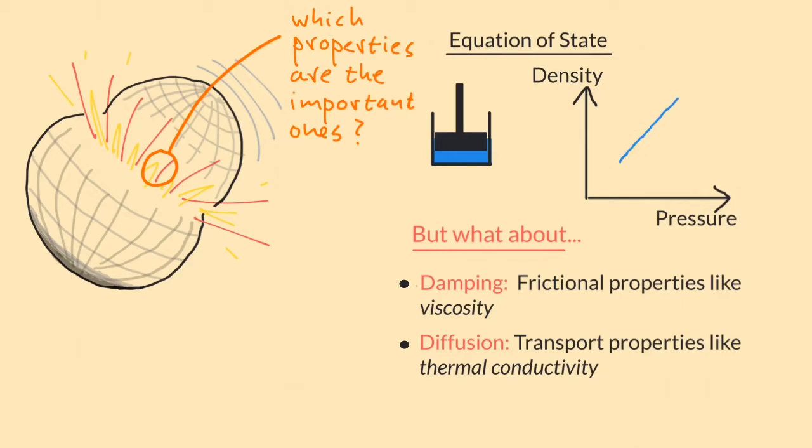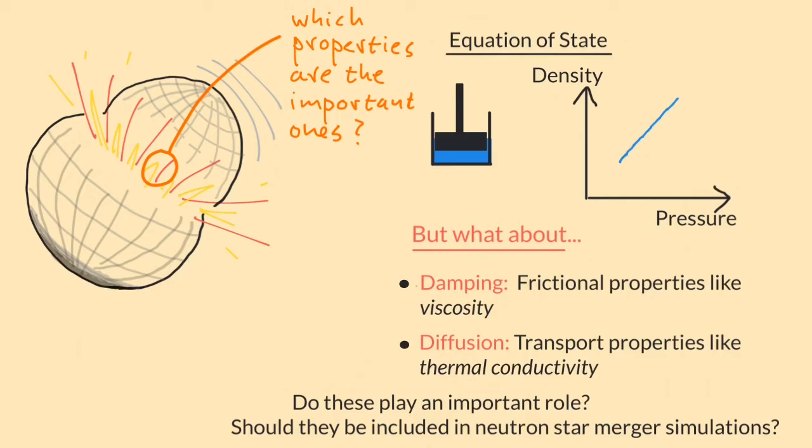So, do features like viscosity and thermal conductivity play an important role? If we want to do really accurate simulations of mergers, do we need to include them in our computer calculations? Let's look at these properties a little bit more closely.